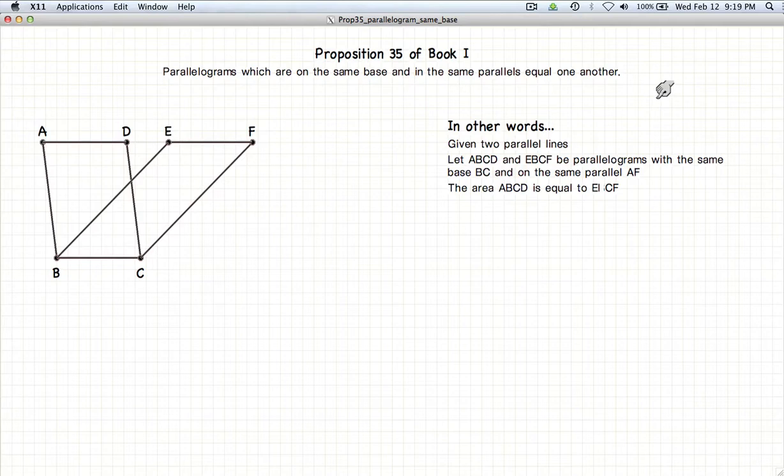This video presentation is going to be on Proposition 35 of Book 1, which states that if you have two parallelograms with a common base and a common parallel, the area of the two parallelograms are equal.